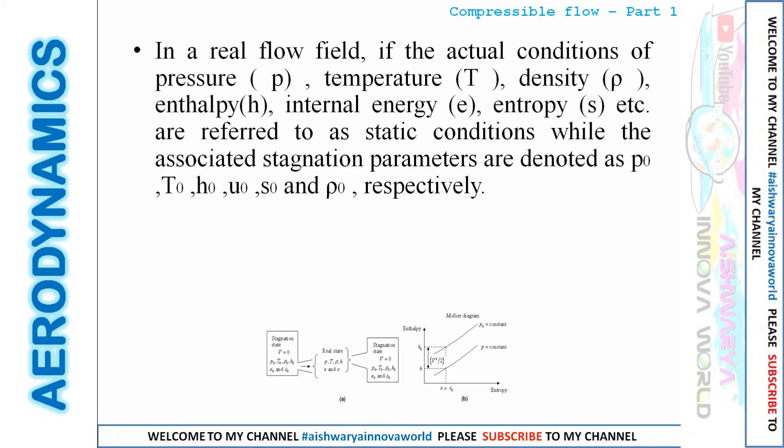The actual pressure, temperature, density, enthalpy, internal energy, and entropy are referred to as static conditions. The associated stagnation parameters are denoted as P₀, T₀, h₀, u₀, s₀, and ρ₀ respectively. P₀ is stagnation pressure, T₀ is stagnation temperature, h₀ is stagnation enthalpy, u₀ is stagnation internal energy, s₀ is stagnation entropy, and ρ₀ is stagnation density.